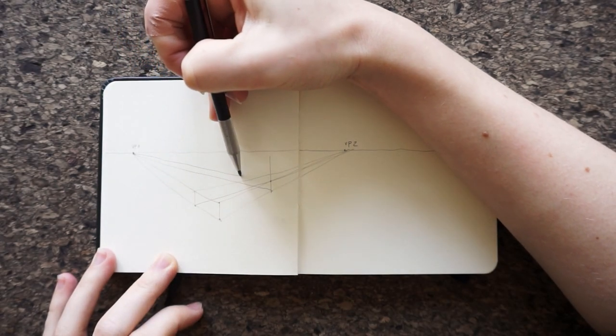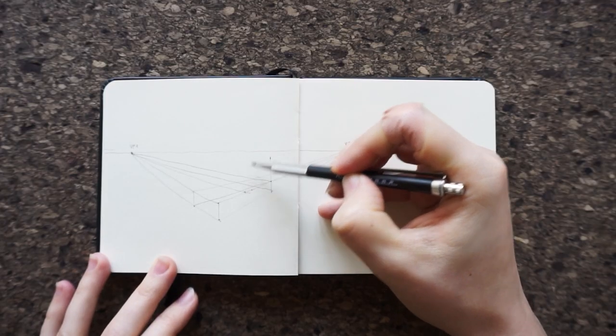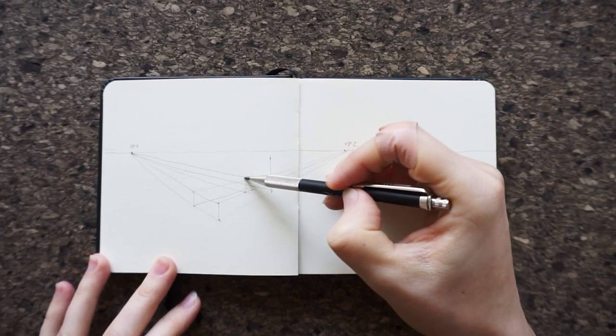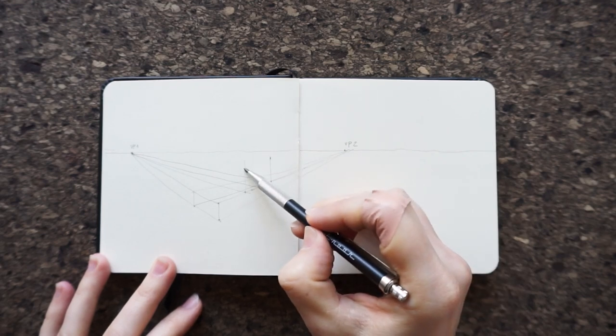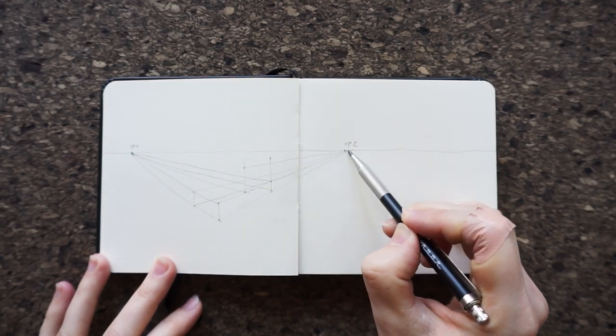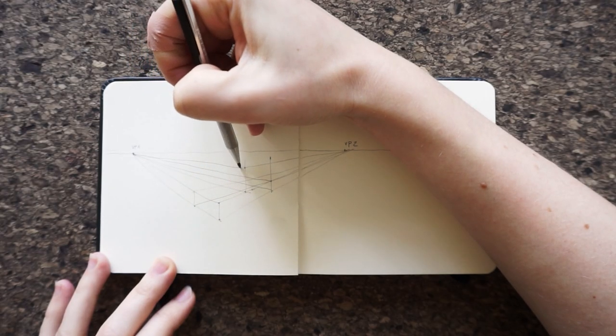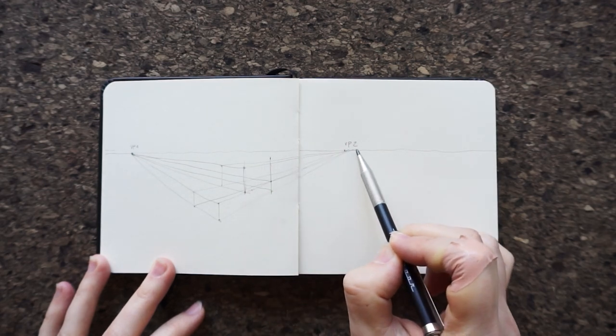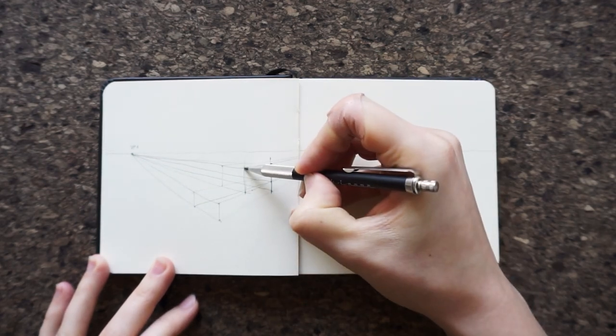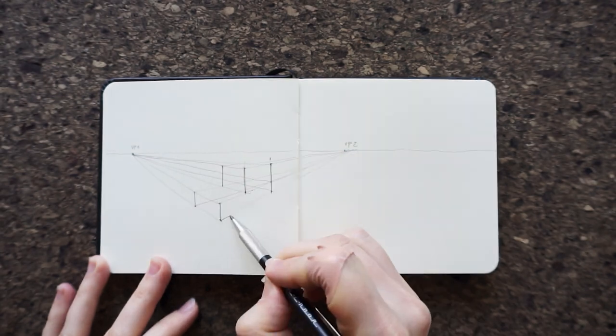When you've constructed the bottom rectangle, you can proceed with the top one. Draw a vertical line extending from its side. This is going to be the first edge of the standing rectangle. Once the two rectangles are done, you can construct a shadow for them in the same way we did with the cube.